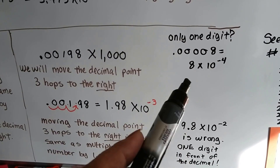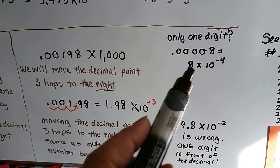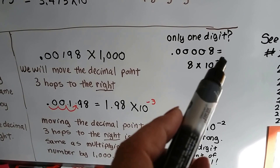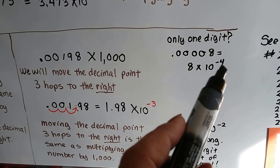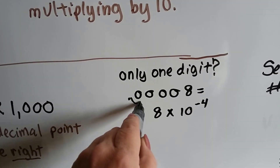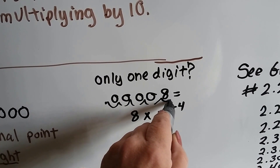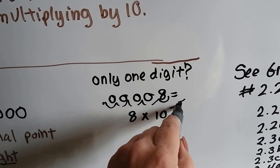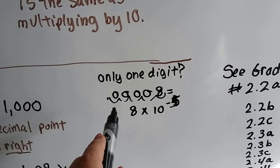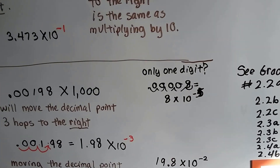If there's only one digit, then we don't write a decimal point — we just put that one digit times 10 to whatever power it is. In this case it would be to the negative five because we're moving the decimal one, two, three, four, five places. So however many spaces you moved it, that's what it would be.